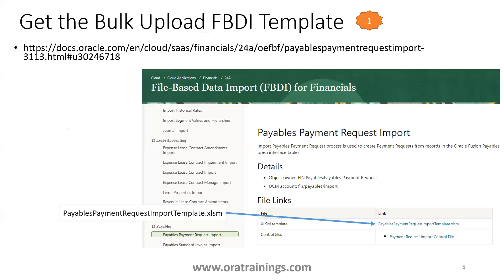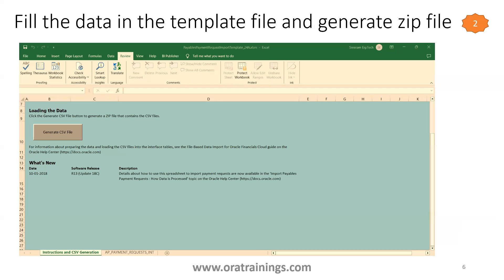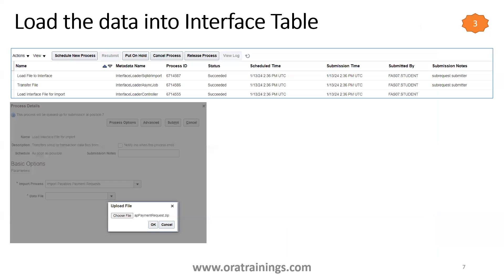The first step is to get the appropriate FBDI template based on the version you are working on. It is an Excel macro-enabled file (.xlsm) named 'Payables Payment Request Import Template.xlsm'. Once you open this file, the first sheet is an instruction sheet with all documentation information. The second sheet is 'AP_PAYMENT_REQUEST_INT', which is the only data sheet. Fill your data in the second sheet, then go to the instruction sheet and click 'Generate CSV File', which will generate a zip file containing a CSV file.